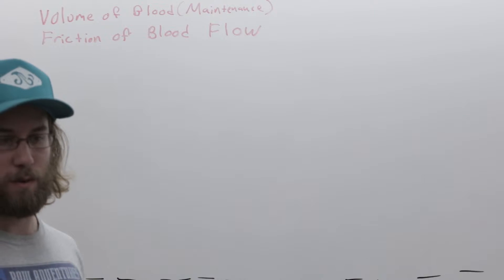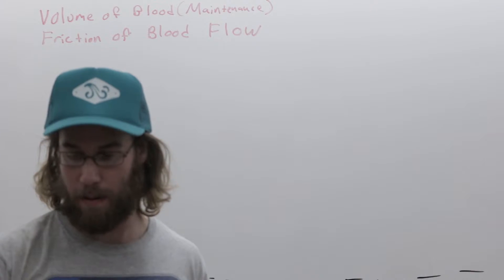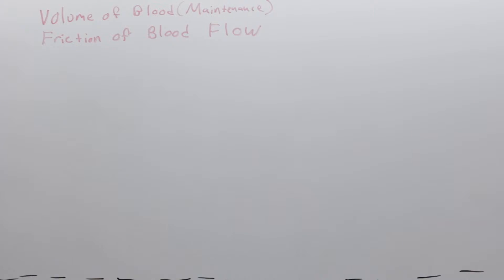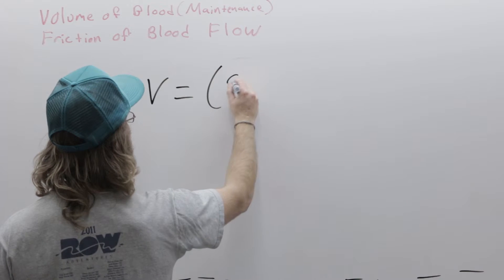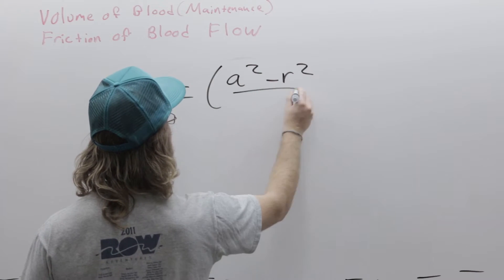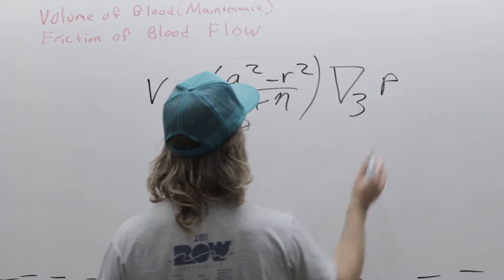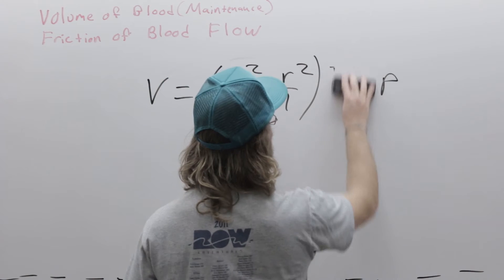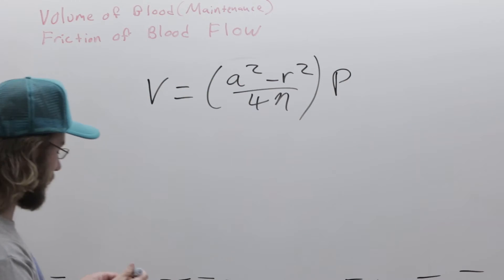Flow through pipes is well known and well described by something known as Poiseuille's law, which gives us a velocity profile. V equals (a² - r²)/4η times ∇P, which is the pressure gradient, which we're going to call P, because we're going to assume it's uniform across the pipe, and it will be in the axial direction of the pipe.